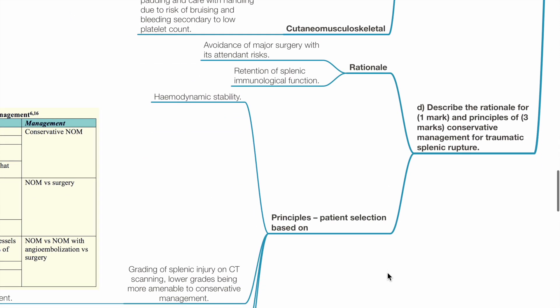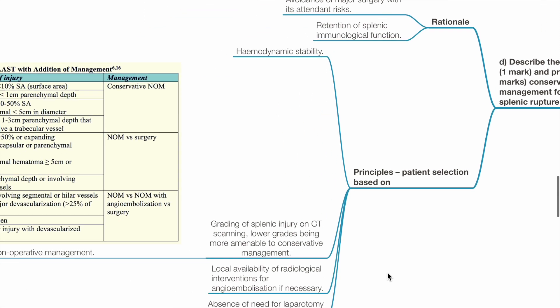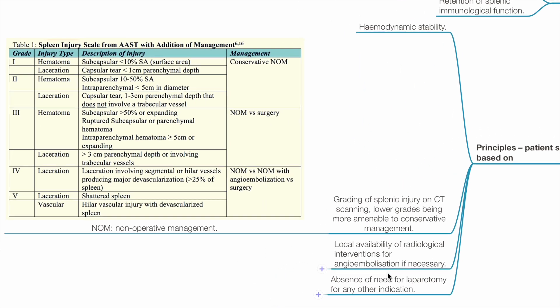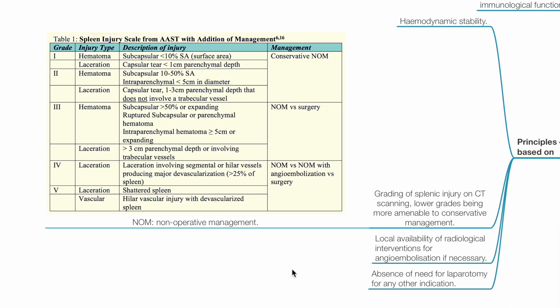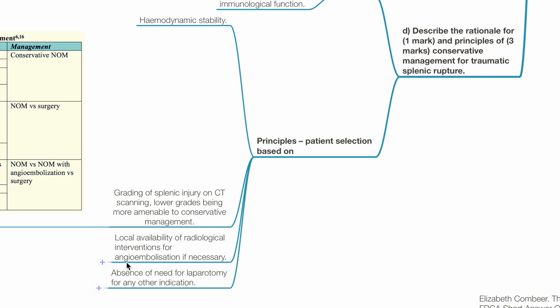Question D: Describe the rationale and principles of conservative management for traumatic splenic rupture. The rationale is to avoid major surgery with its attendant risks and to retain splenic immunological function. Patient selection is based on haemodynamic stability, grading of splenic injury on CT scan — with lower grades such as 1 and 2 being more amenable to conservative management — local availability of radiological interventions for angioembolisation if required (such as in grade 4 and 5 splenic injury), and absence of any other indication for laparotomy.